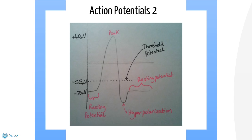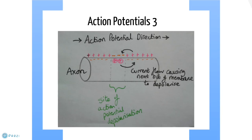Following depolarisation, the sodium channels shut and potassium channels in the membrane open, allowing rapid repolarisation of the axon back to around minus 70 millivolts. Following repolarisation there is a refractory period when the nerve cannot fire again for a short time. The action potential travels down the axon by depolarisation of one area of the membrane causing a flow of current down the axon, triggering depolarisation of the next section.